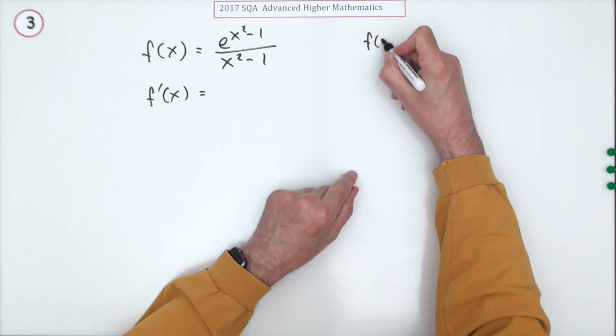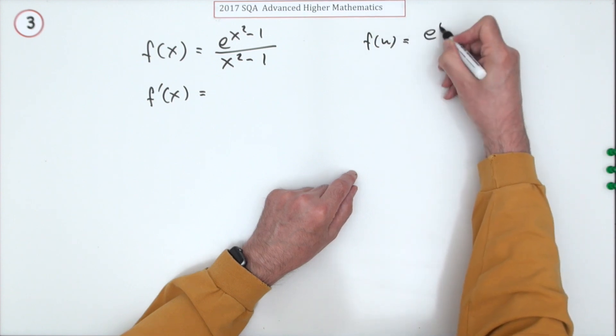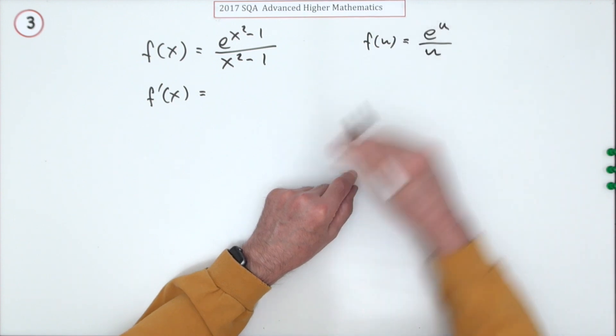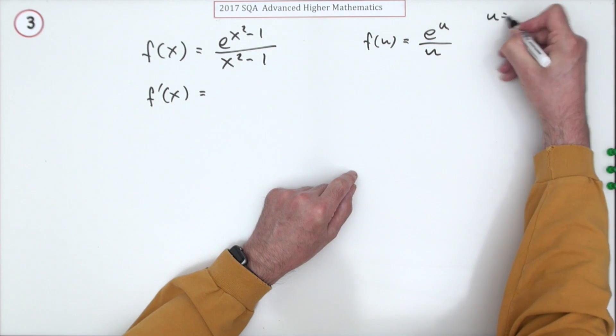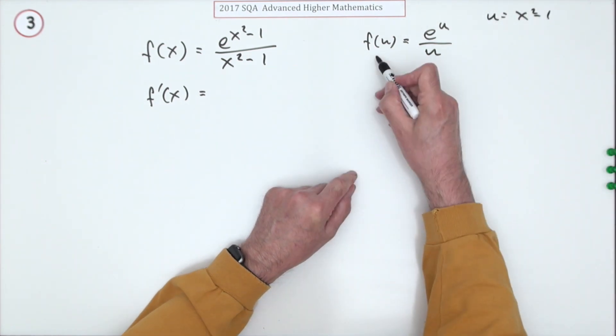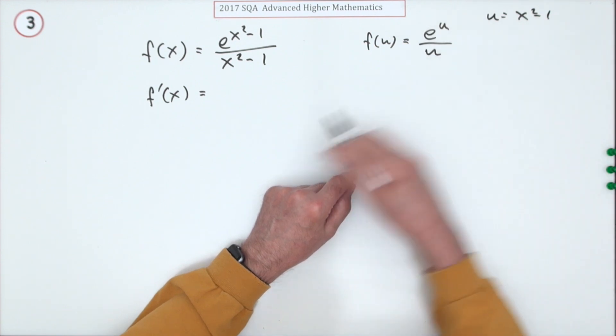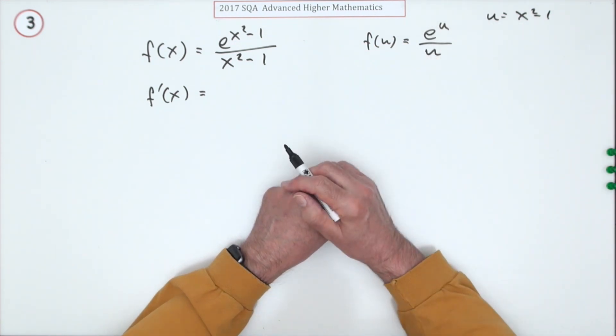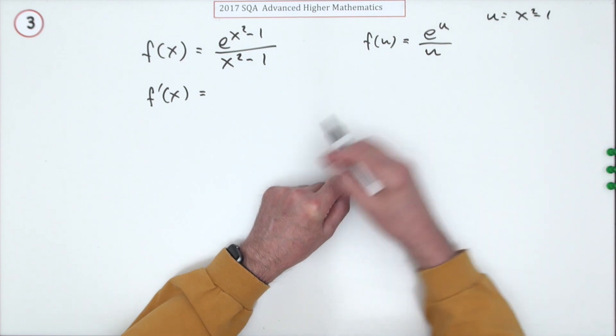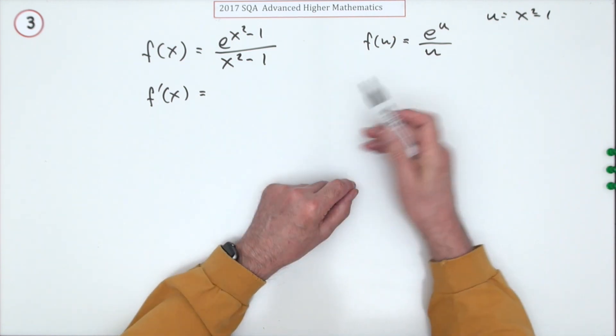f(u) = e^u / u, where u = x² - 1. Then the derivative would be, using the chain rule, the derivative of that times the derivative of this. But you're still going to have to use the quotient rule. It's not going to facilitate the maths anyway.